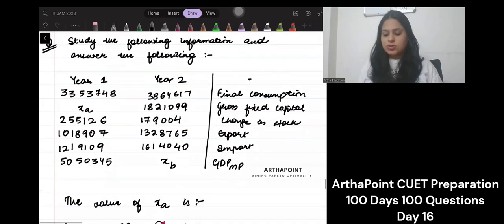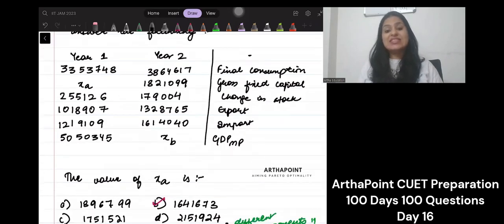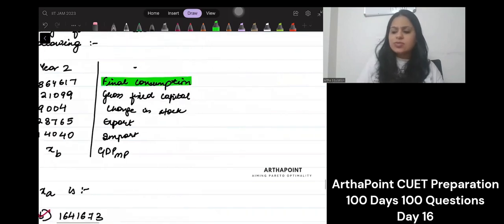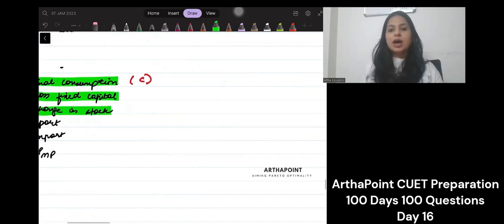Let's have a look at the options. It says the value of XA is, so just have a look here. You want to go ahead and find out what this XA is. And what are the different things that you are given? You are given fixed consumption, final consumption, which is just C. Then you are given gross fixed capital and you are given change in stock.